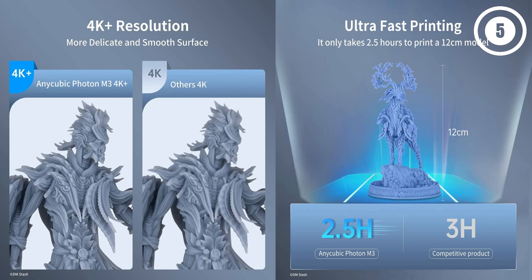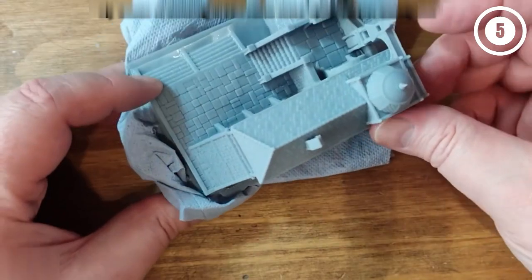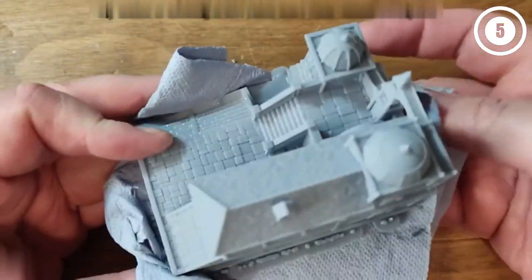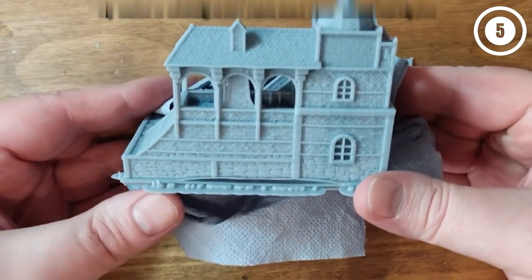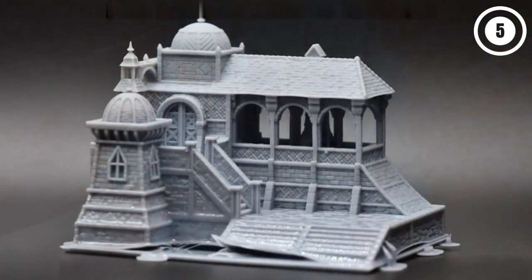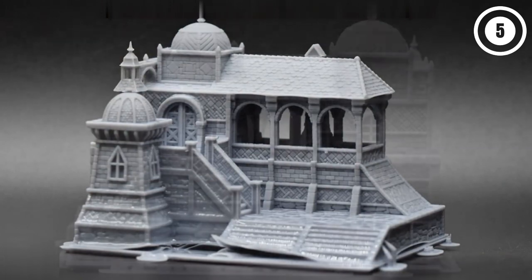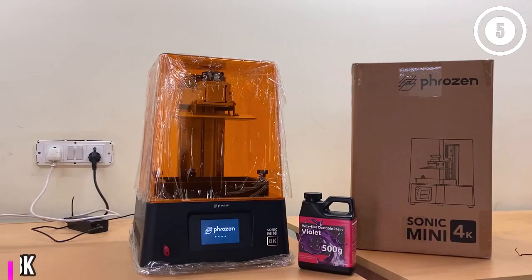Reasons to buy: Detailed 4K plus prints, Fast 2 second per layer exposure time, Effortless print removal, Roomy build volume for a small printer. Reasons to avoid: 4-bolt leveling platform. Number 2.